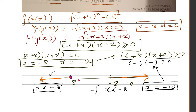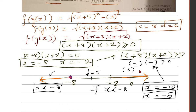Now let's test the middle region between -8 and -2. Pick x = -5. Then x+8 = 3, which is positive, and x+2 = -3, which is negative. Positive times negative is negative, which is less than zero, so we cannot accept any values in this region.